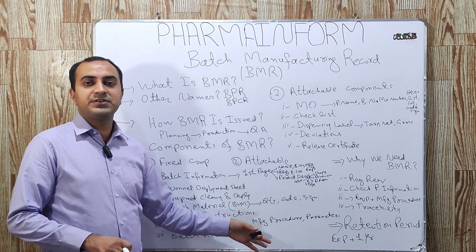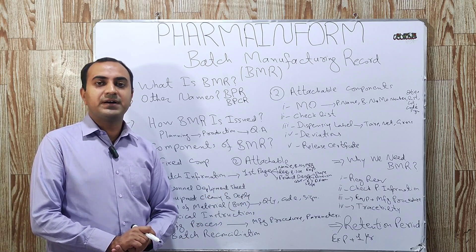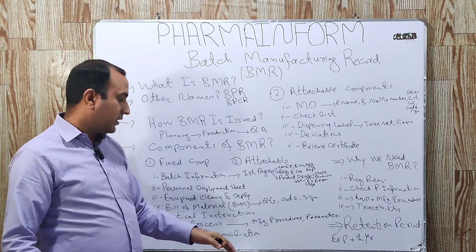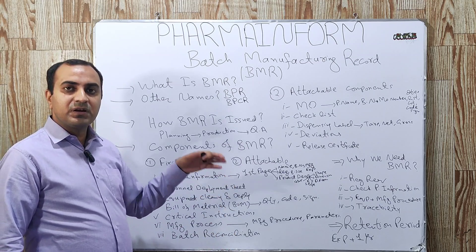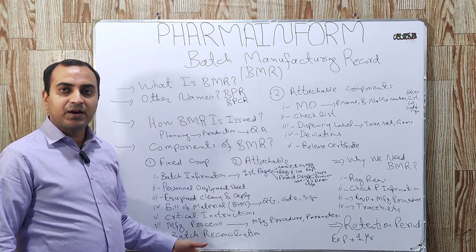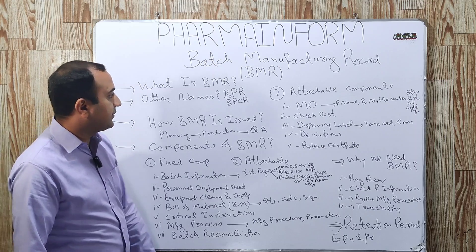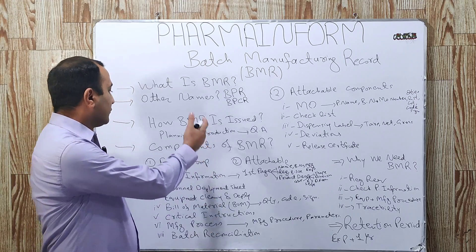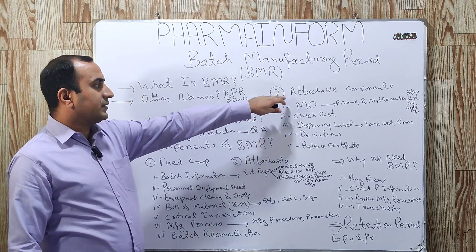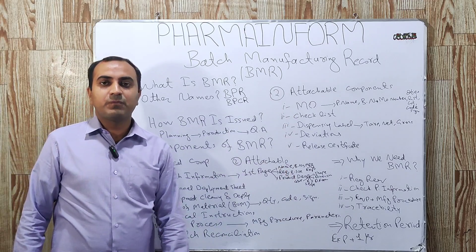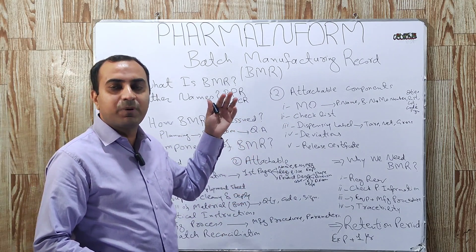The next fixed component is batch reconciliation. If you are not familiar with batch reconciliation, a link to a reconciliation video is given in the description — watch that video completely to learn about batch reconciliation. In this portion, we reconcile our batch. That was all about the fixed components.